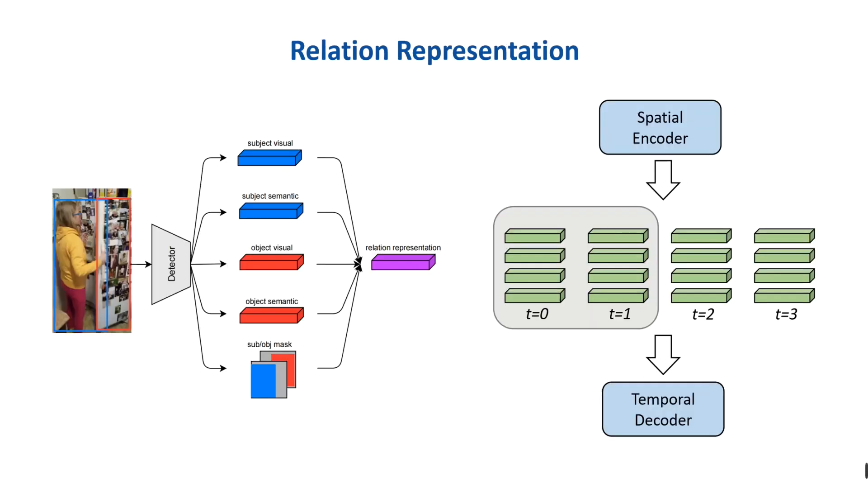A relation representation provided by the object detector includes the subject visual feature, subject semantic vector, object visual feature, object semantic vector, and the subject-object location information.